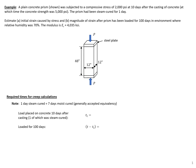In this example problem, we're looking at a plain concrete prism subjected to a compressive stress of 2,000 PSI at 10 days after casting, at which time the concrete strength was 5,000 PSI. The prism had been steam cured for one day. We're going to estimate the initial strain caused by the stress and the magnitude of strain after the prism has been loaded for 100 days in an environment with 70% relative humidity. The modulus of elasticity for our concrete is 4,032 KSI.